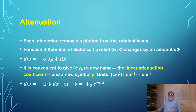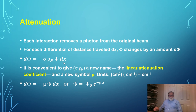For each small infinitesimal distance dx traveled, phi changes by an amount d-phi — a certain number of photons are removed. The bigger phi is, the more interactions occur. The bigger the number density, the more interactions occur. The bigger sigma is, the more interactions occur. And the farther we travel in the material, the more interactions occur. So d-phi is the product of all these factors. It's convenient to give the combination phi times n a new name: the linear attenuation coefficient, frequently represented by the symbol mu.